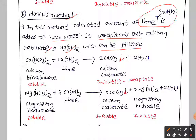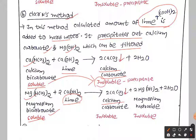In hard water, we have calcium bicarbonate and magnesium bicarbonate in soluble form. When you add lime (calcium hydroxide), calcium bicarbonate is precipitated as calcium carbonate in insoluble form. Simply put, soluble bicarbonates are converted into insoluble carbonates. In the reaction with lime, you get calcium carbonate and magnesium hydroxide together, both in insoluble form, which can then be separated easily.